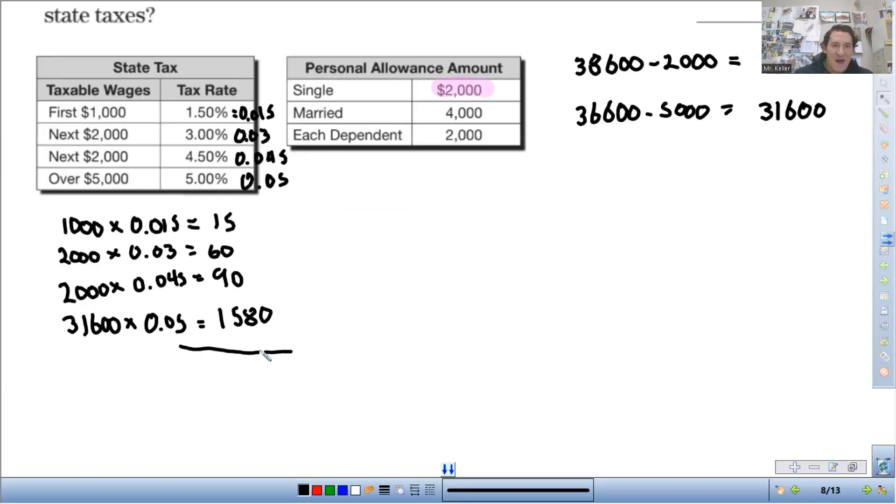If I add all this up, so the total for the taxes, so $1,580 plus 90 plus 60 plus 15, add all that up. He is taxed total, he's taxed $1,745 total for the entire year.